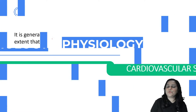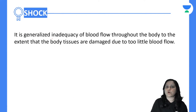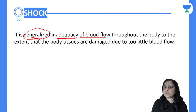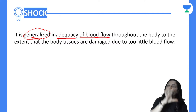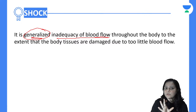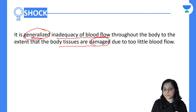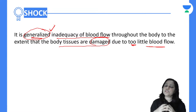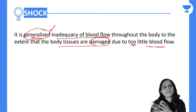Now let us go through the cardiovascular system. Today's topic is shock. What is shock? Let us understand the definition first. It is generalized inadequacy of the blood flow throughout the body to the extent that body tissue will be damaged because of too little blood flow. So it is generalized inadequacy of blood flow throughout the body which will cause tissue damage because of very, very less blood flow.